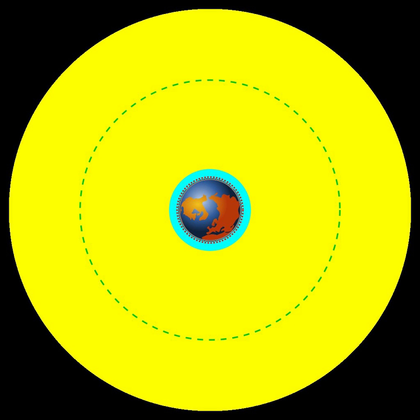Medium Earth orbit, geocentric orbits ranging in altitude from 2,000 km to just below geosynchronous orbit at 35,786 km. Also known as an intermediate circular orbit. These are most commonly at 20,200 km or 20,650 km with an orbital period of 12 hours.